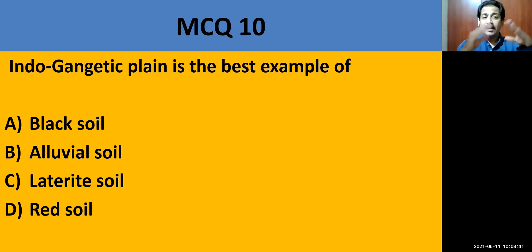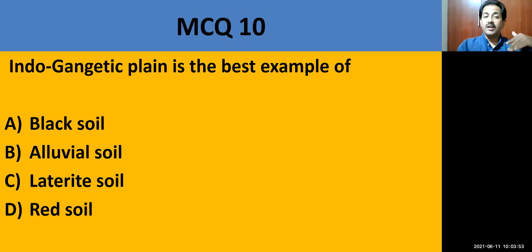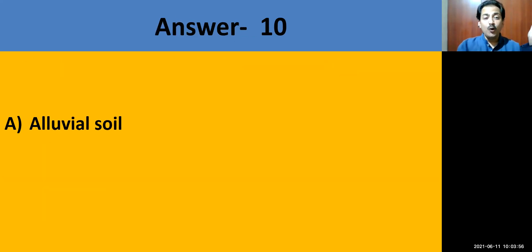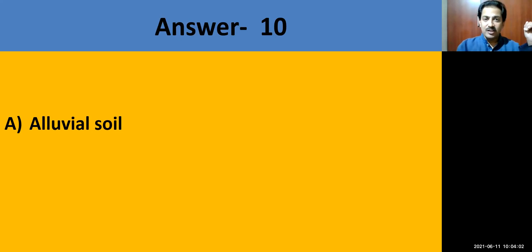MCQ question number 10: The Indo-Gangetic plain is the best example. This plain is formed by the rivers Indus and Ganga, which have brought alluvial soil from the high mountains and deposited it over the plains. The correct answer is alluvial soil.